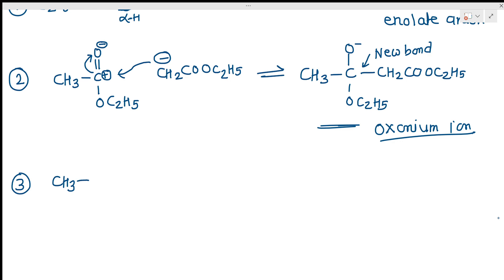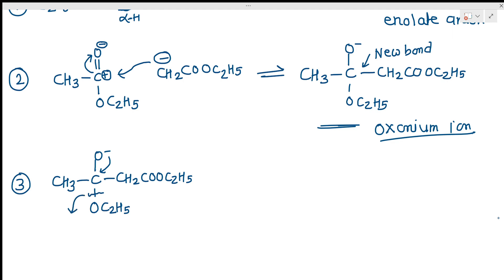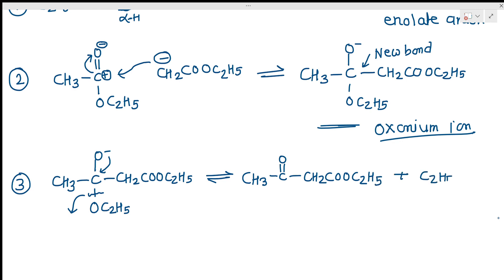In Step 3, the alkoxide intermediate — CH₃CO–CH₂COOC₂H₅ with OC₂H₅⁻ — undergoes bond breaking: the negatively charged ethoxide ion OC₂H₅⁻ is eliminated. All these steps are reversible and in equilibrium. We obtain the beta-keto ester product and regenerate the ethoxide ion C₂H₅O⁻.